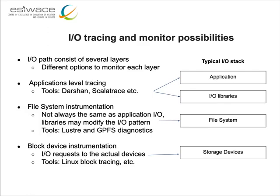We discussed in the previous part of the presentation that the way we use the storage system impacts greatly the performance. As an application is running, we would like to be able to see how the storage system is being used. The typical IO path, as shown on the right-hand side, consists of several layers. In the top layer we have the application, then the applications might use IO libraries like HDF5 or NetCDF, and then we have the file system, and beneath at the lower level we have the storage devices that will actually store the data. So tracing and observing the IO as it goes through all these layers is something that we can do.